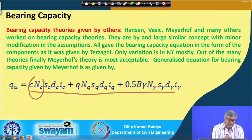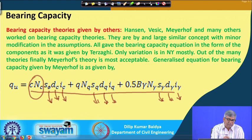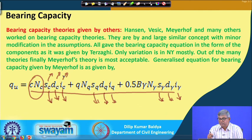In the generalized form, you can see that earlier there was only the Nc, Nq, Nγ terms. Now there are additional factors: sc, dc, ic for the cohesion term; sq, dq, iq for the surcharge term; and sγ, dγ, iγ for the unit weight term. These are correction factors. The correction factor for cohesion accounts for the shape of the foundation.